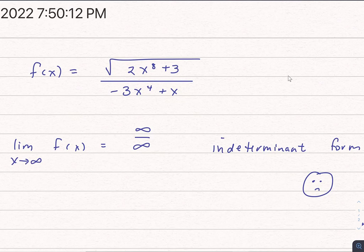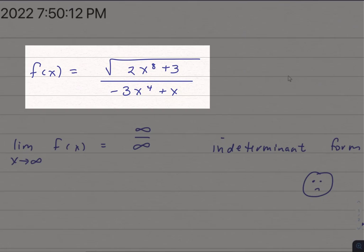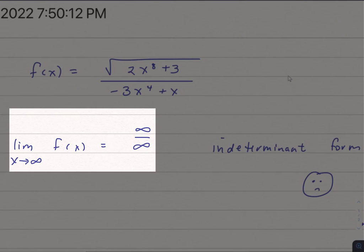All right, let's look at a function like this, where we have a rational function and we have a square root. And if we go ahead and look at the limit as x approaches infinity of this function, we're going to get infinity over infinity.